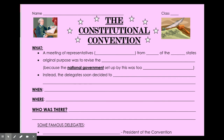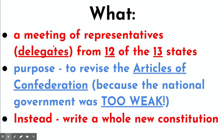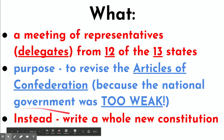So the Constitutional Convention — this is the note sheet right here. Pause and get that note sheet out. Go sharpen your pencil or pen. So what was it? It was a meeting of representatives or delegates from 12 of the 13 states. The underlined words will help you. The purpose of this was to revise — and revise means fix — the Articles of Confederation. Why? Because the national government set up by this was too weak. However, the delegates soon decided to write a whole new constitution.